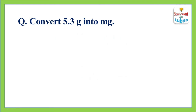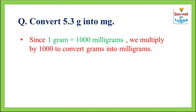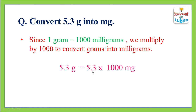Convert 5.3 grams into milligrams. We already know that 1 gram is equal to 1,000 milligrams. So in order to convert 5.3 grams into milligrams, we will multiply 5.3 by 1,000. In order to multiply a decimal number by 1,000, we have to shift its decimal point 3 places to the right-hand side. But after the decimal point we have only 1 place, so we will put 2 zeros by our own. The answer is 5,300 milligrams. So 5.3 grams is equal to 5,300 milligrams.